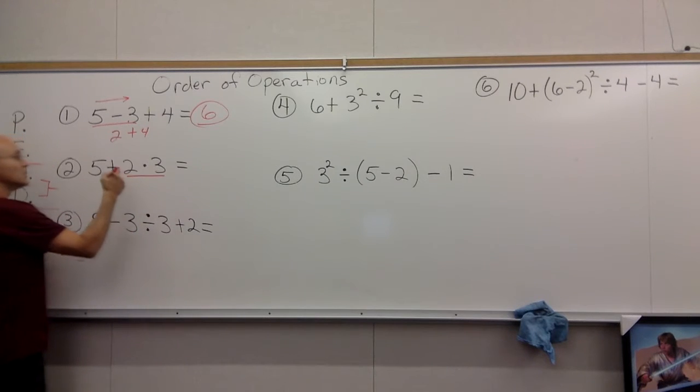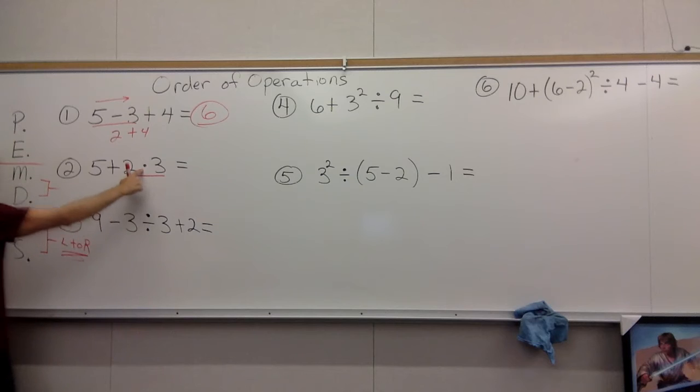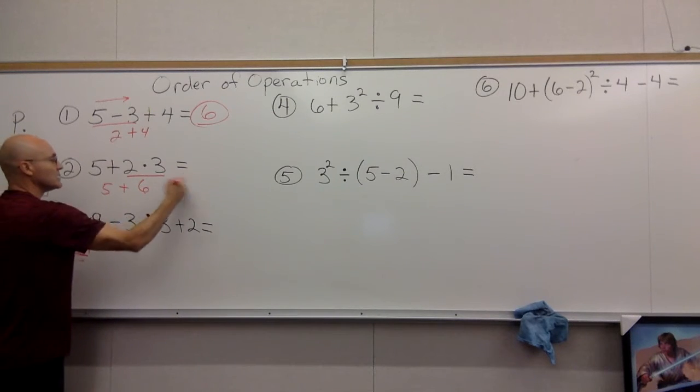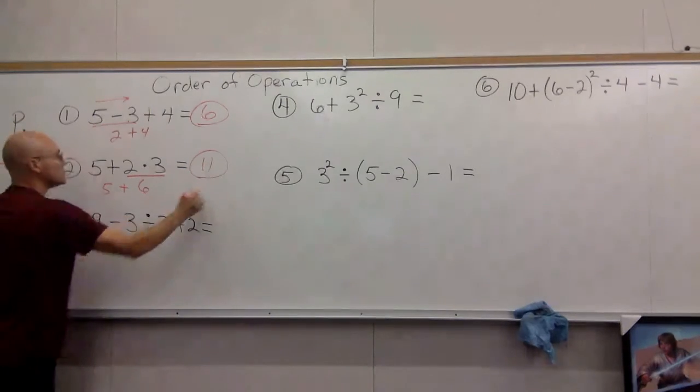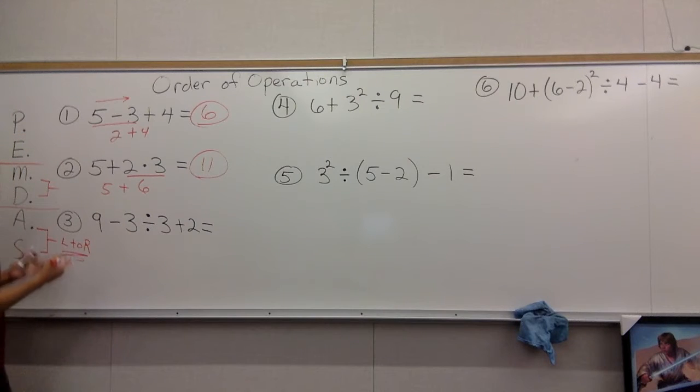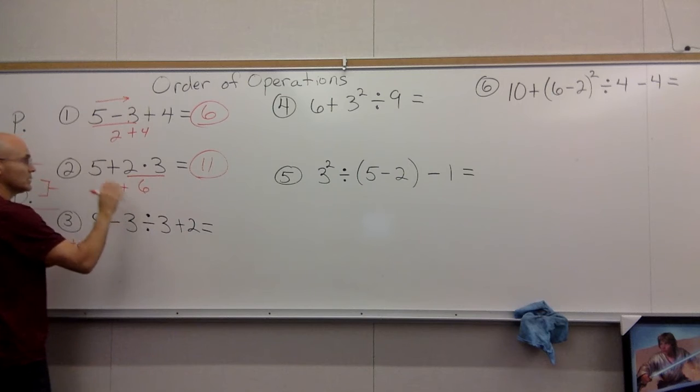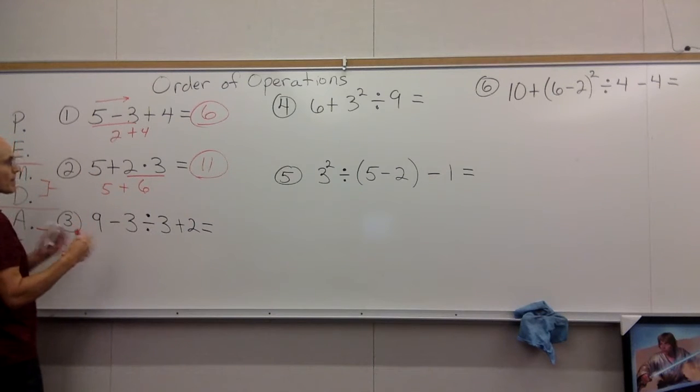We would multiply first because of PEMDAS. Multiply and divide always beat add and subtract. That gives you 6, and 6 + 5 gives you the answer of 11. Kids that would do it wrong would add that first and get 7 × 3 and get 21, so that's the wrong answer.